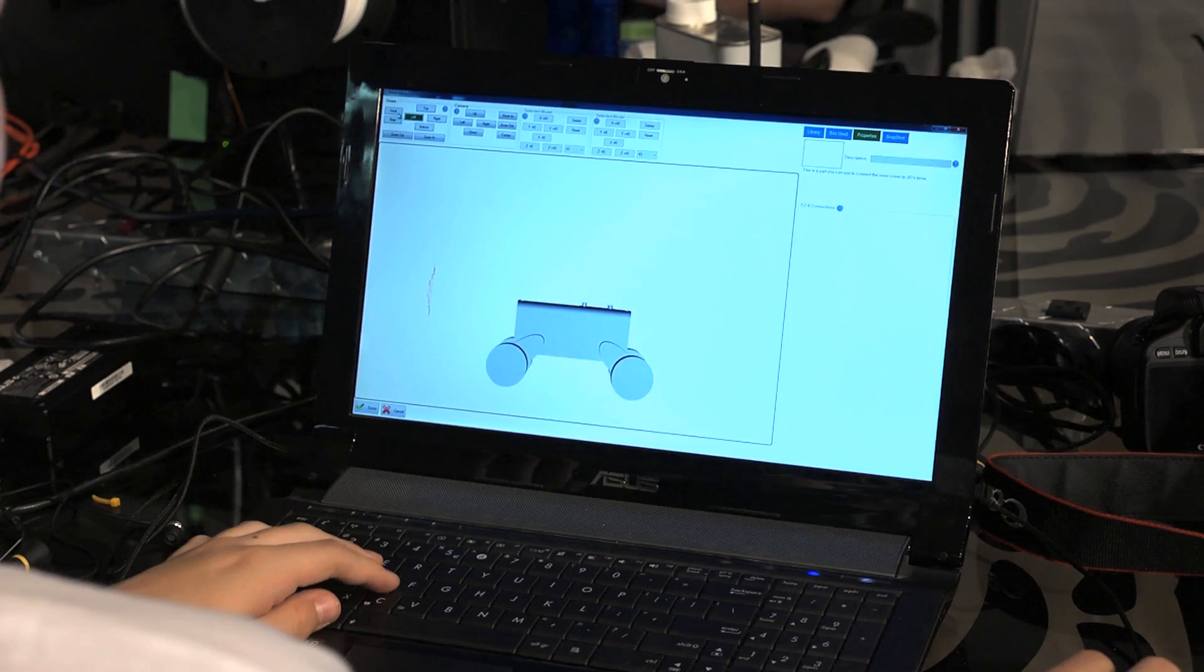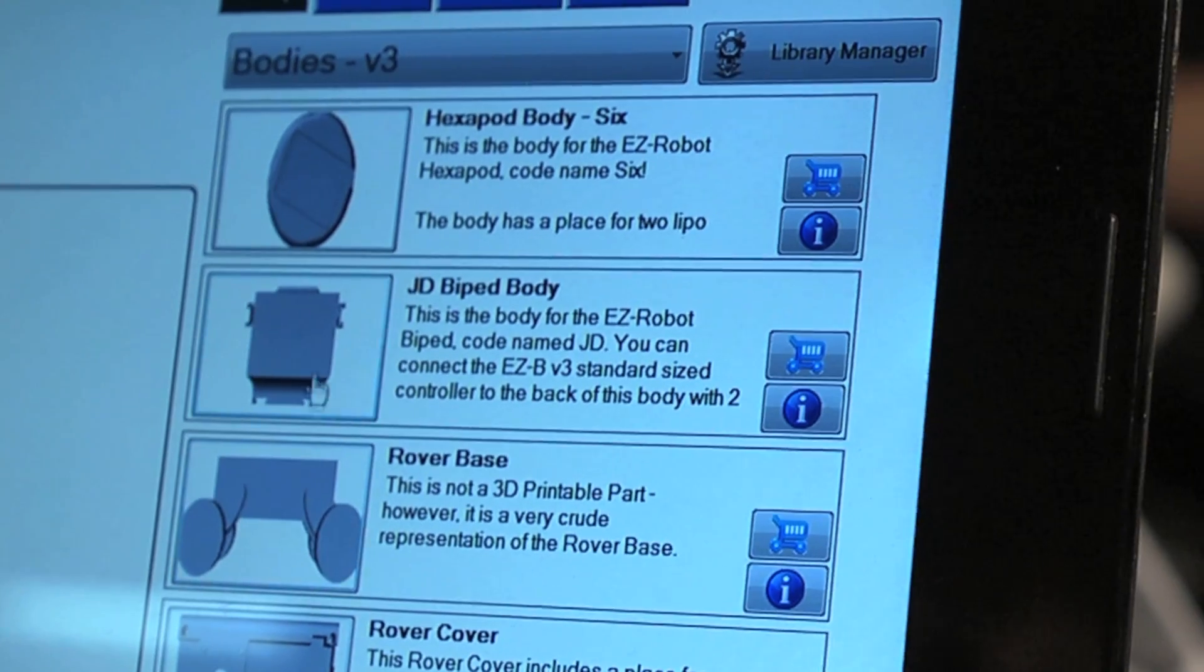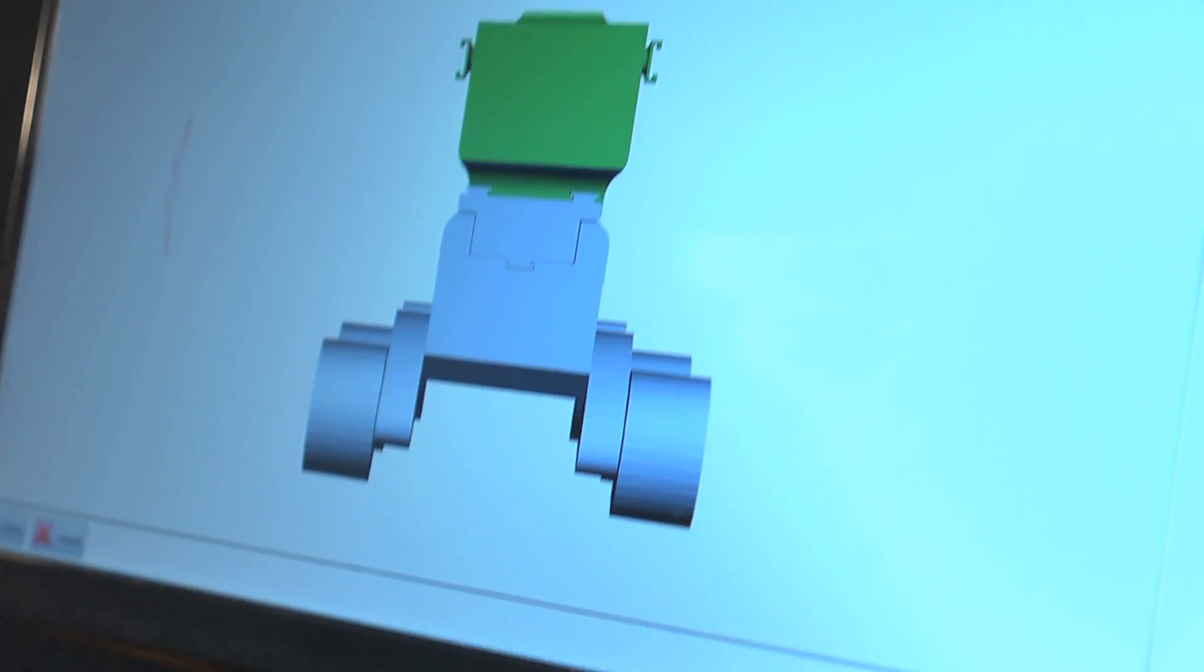I just dragged in Roly's chassis, JD's upper body and the adapter and I could see how they fit and how it was going to look.